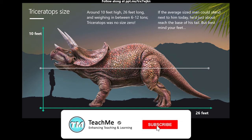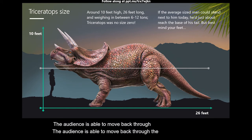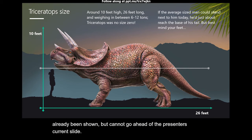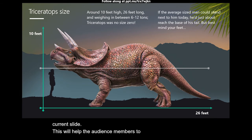The audience is able to move back through the slides that have already been shown but cannot go ahead of the presenter's current slide. This will help audience members to track back and check information they may have missed from the previous slide.